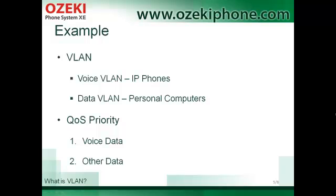Now let's see an example of why VLANs are good. VLAN allows you to separate IP phones and computers, so Voice VLAN consists of IP phones and the PCs are in the Data VLAN. VLAN technology requires reliability and should be available 100% of the time. QoS can give a higher priority to VLANs, meaning that voice data packets have priority above other data.